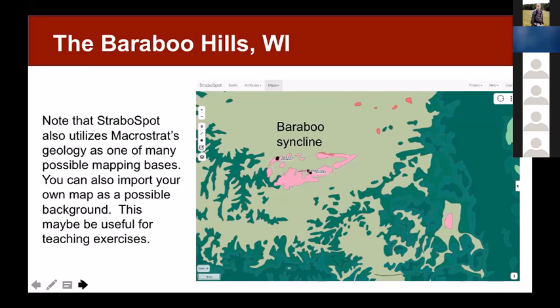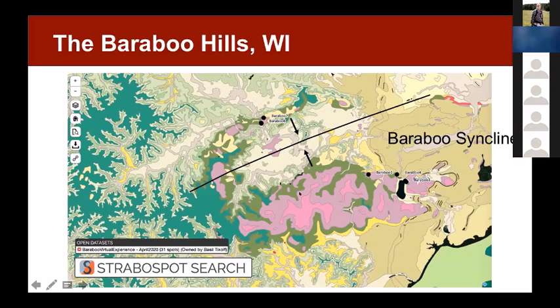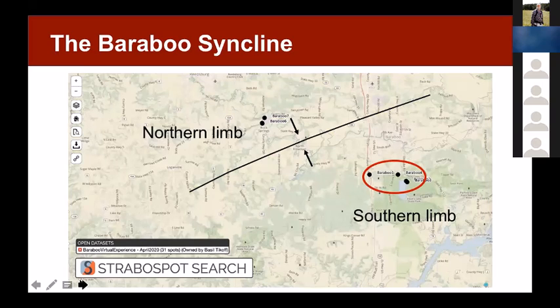Here are the spots on the state map of Wisconsin. But as you zoom in, you get more detail. Here are the spots now on — I think it's a one by two degree sheet. Where you can see that there's a syncline here. There's the axis of the syncline, and you can see that spots one through four lie on the south side, five, six, seven on the north side of Baraboo. You can look at the difference in structures. This is all from the desktop application, but it works on the field application as well. We're going to look first at the southern limb structures, so these dip all shallowly to the north.